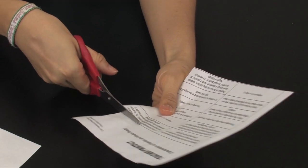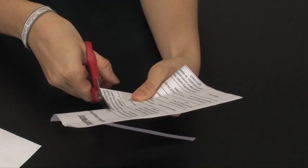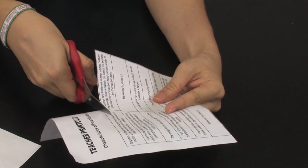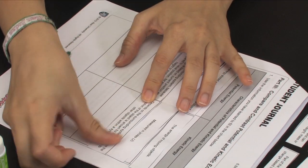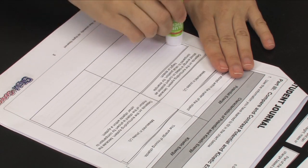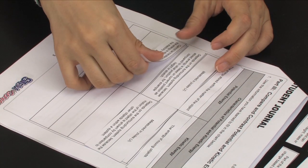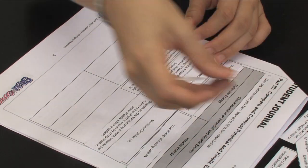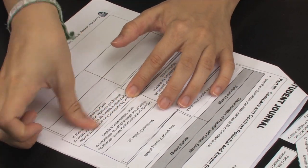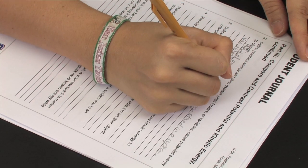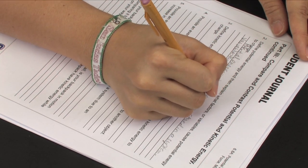Students will cut apart the set of cards, read them, and determine how they show a comparison and should be paired with another card. They will then paste each related pair under the correct column for potential and kinetic energy in the chart titled Characteristics of Potential and Kinetic Energy in Part 3 of their student journal. Students will use the completed chart to answer questions in Part 3 of the student journal.